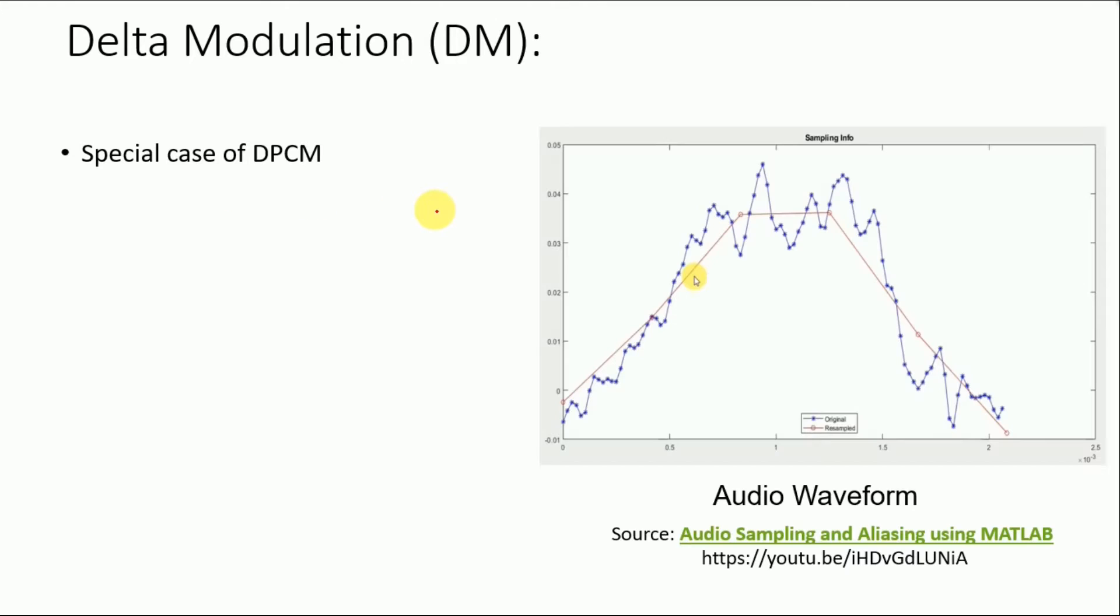Delta modulation. So it's a special case of differential pulse code modulation. To get some intuition, let us look into this audio waveform. The blue curve is representing an audio signal and the stars in it are identifying the sample positions that are taken based on the sampling rate. For instance, the sampling time between this sample and this sample is simply Ts. So in pulse code modulation, we are encoding all of these samples.